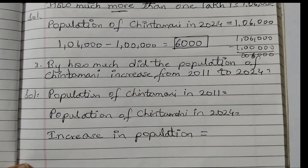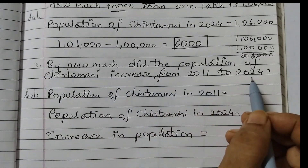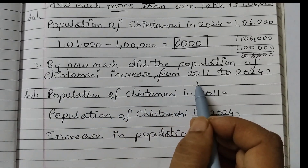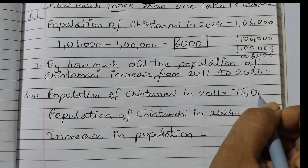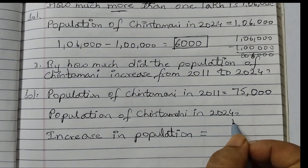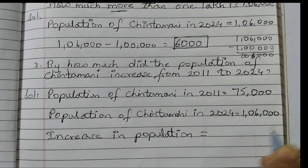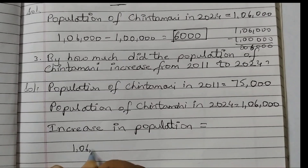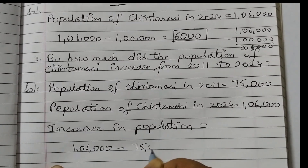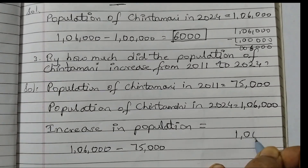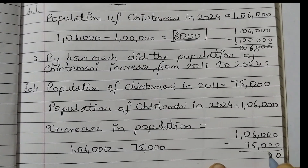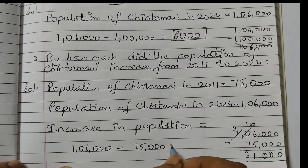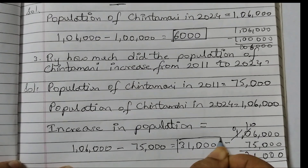The last question is: by how much did the population of Chintamani increase from 2011 to 2024? The population in 2011 was 75,000 and the estimated population in 2024 is 1,06,000. So the increase in population is 1,06,000 minus 75,000. Performing the subtraction gives us 31,000. So the answer is 31,000.